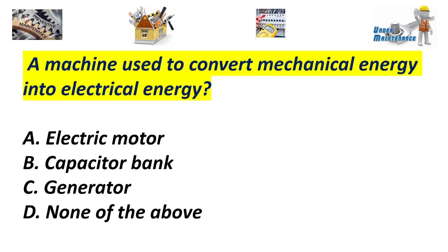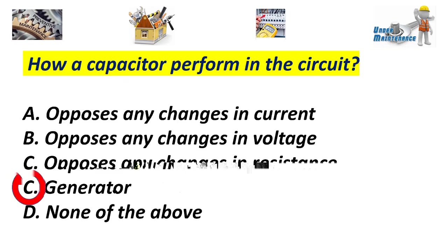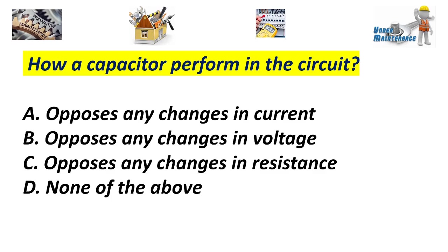A machine used to convert mechanical energy into electrical energy: A. Electric motor. B. Capacitor bank. C. Generator. D. None of the above. Answer: C. Generator. How does a capacitor perform in the circuit? A. Opposes any change in current. B. Opposes any change in voltage. C. Opposes any change in resistance. D. None of the above. Answer: B. Opposes any change in voltage.